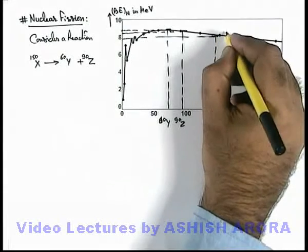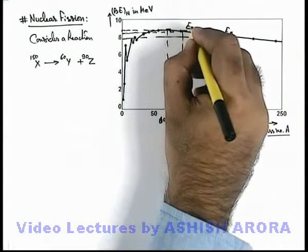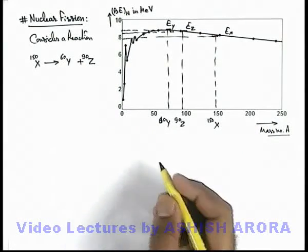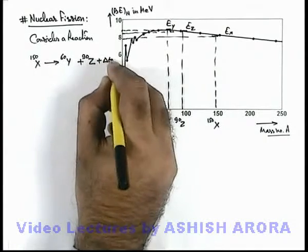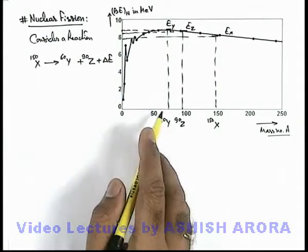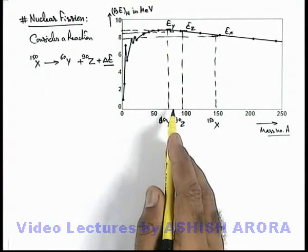Say binding energy per nucleon for X is Ex, that of Z is Ez, and that of Y is Ey respectively. In this situation, certainly some amount of energy will be released in this reaction. Now in this reaction, we can calculate the amount of energy directly by using the binding energy per nucleons.